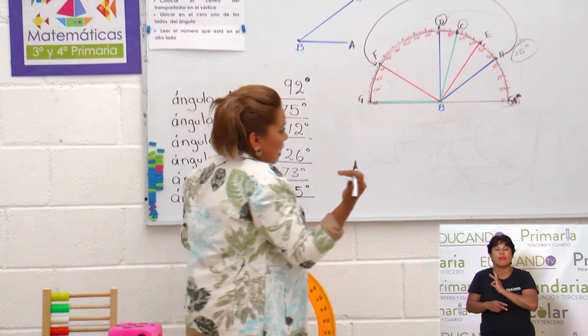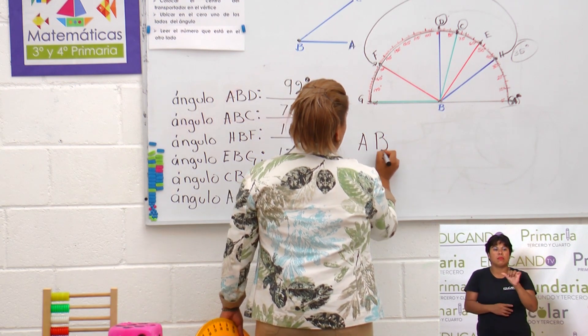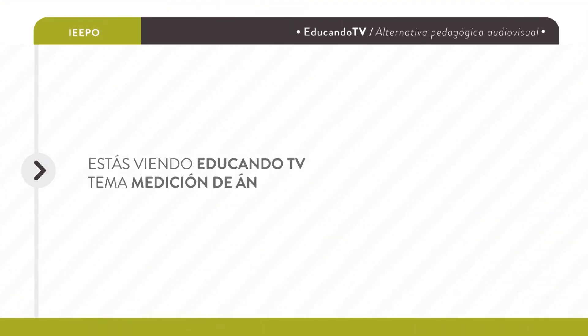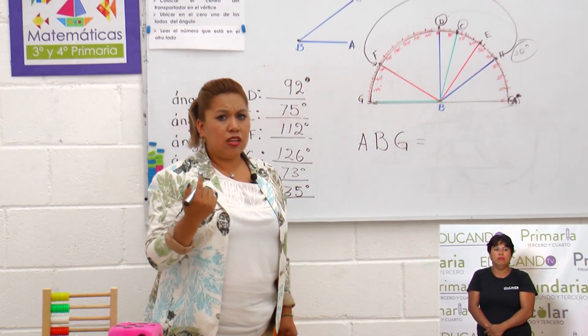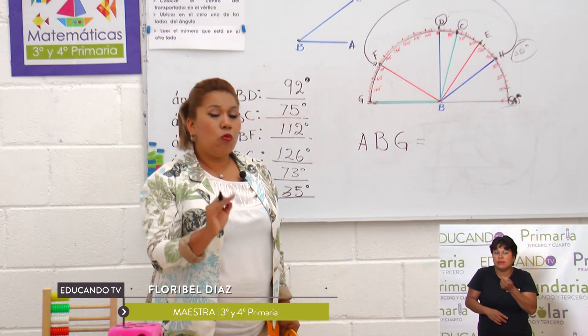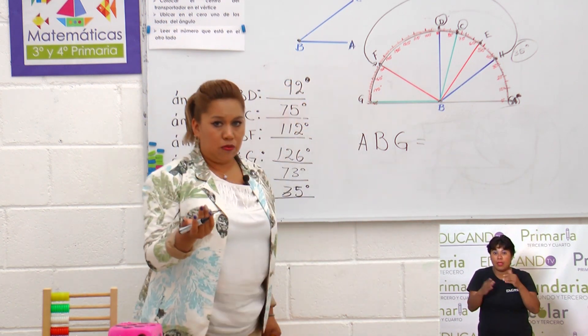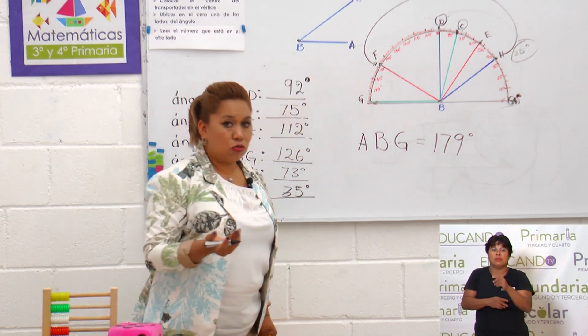¿Falta por medir algunos otros ángulos? Claro que sí. Podemos sacar el ángulo, uno que no esté por acá: A, B, G. A, B, G. ¿Cuánto crees que mide el ángulo A, B, G? Casi, casi es un ángulo llano. Pero date cuenta, está un puntito antes del ángulo llano. Por lo tanto, mide 179 grados.